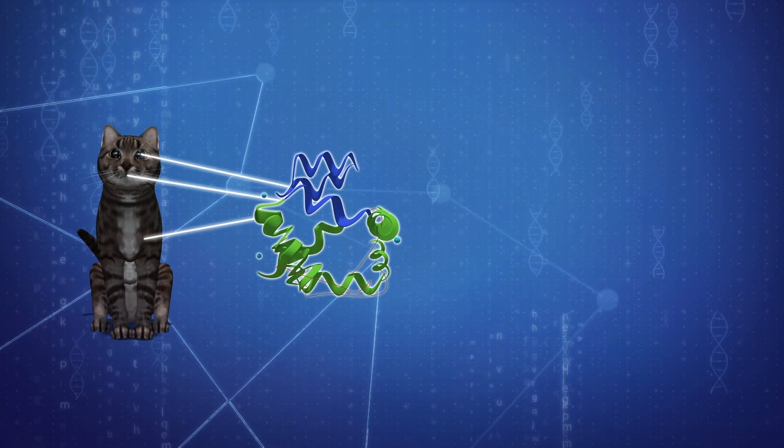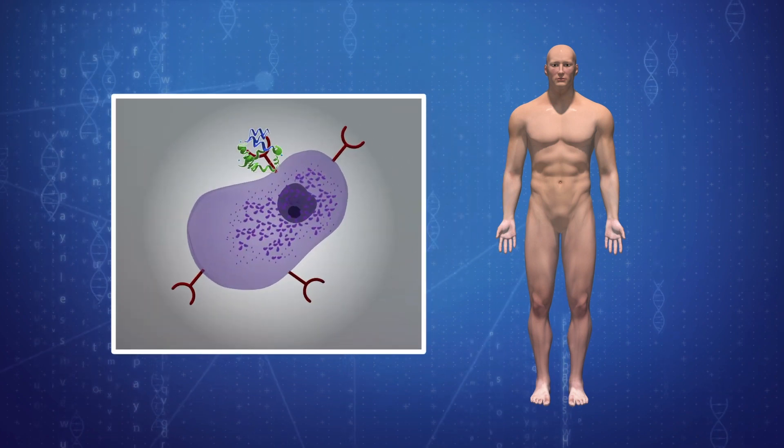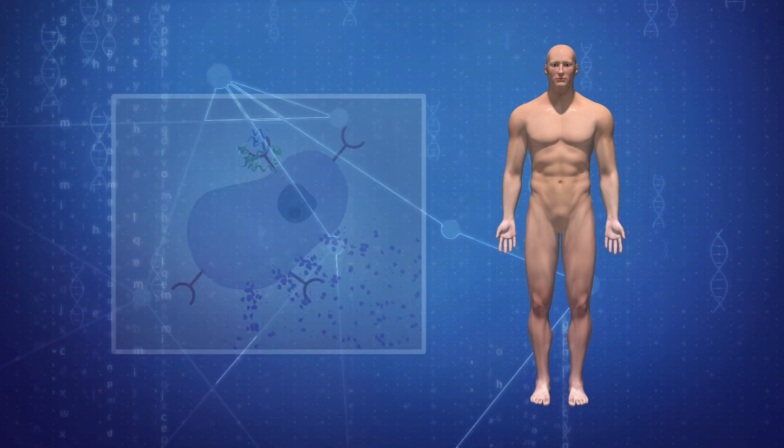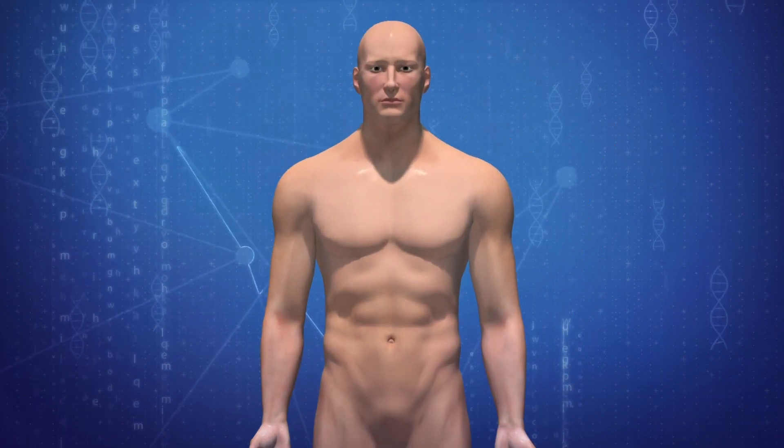When the protein enters the system of someone with a cat allergy, it triggers a reactive rush of histamines, leading to itching, wheezing, and other symptoms.